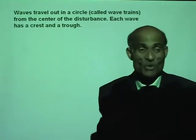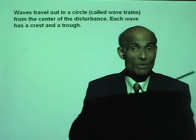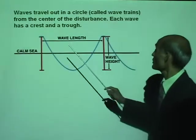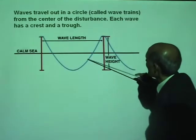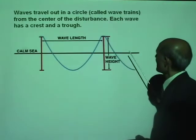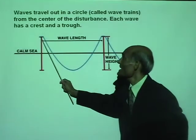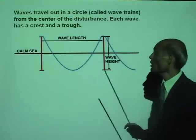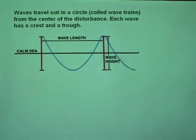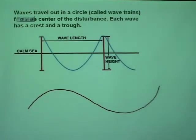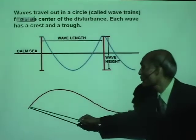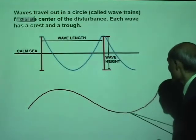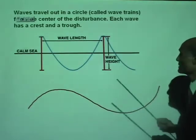Waves travel out in a circle called wave trains. Each wave has a crest and a trough. Wavelength is the distance between crest and crest, or trough and trough — it is the full length of one crest and one trough. The wave height is the distance measured from the bottom of a trough to the top of a crest.